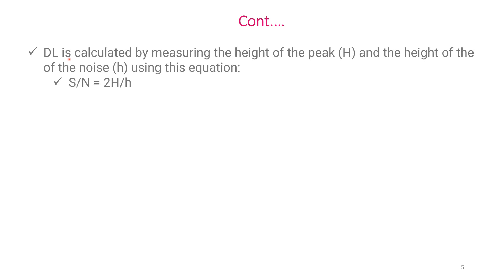The question is: how is DL calculated and how is the S/N ratio calculated? DL is calculated by measuring the height of the peak (capital H) and the height of the noise (small h) using this equation: S/N = 2 × (height of the peak) ÷ (height of the noise).